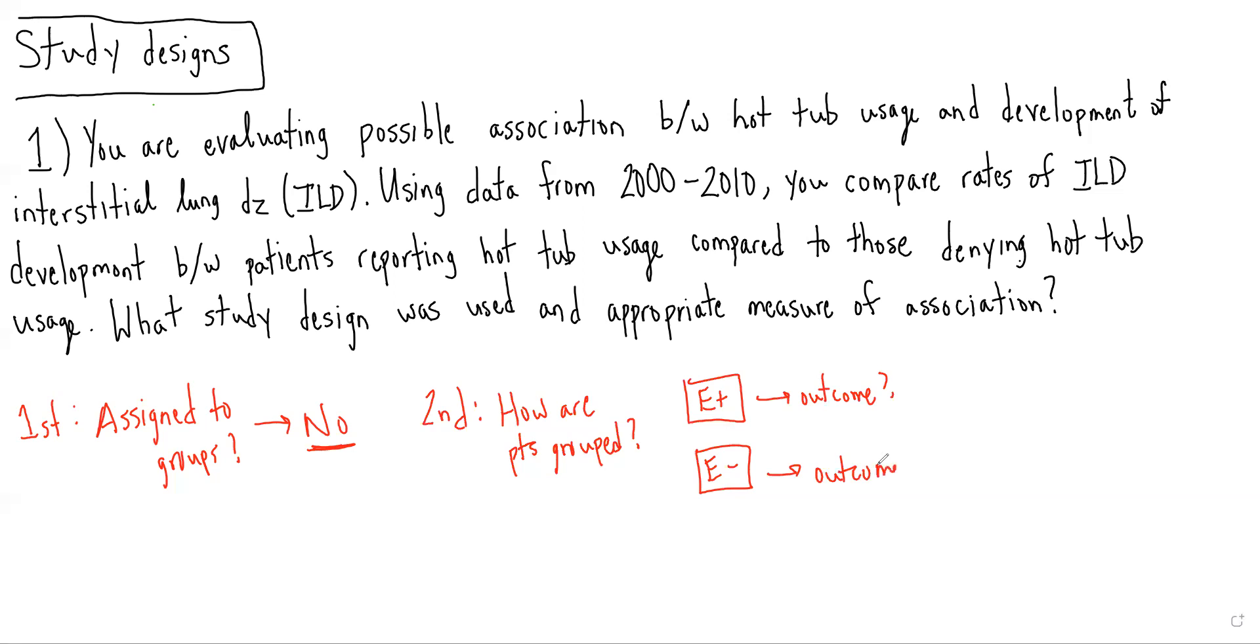Because we are grouping patients by exposure status, we know that this is a cohort study. I want to emphasize that cohort studies can be both prospective and retrospective. In this case, assuming you're watching the video sometime after 2021, we're using data from the past, so this is a retrospective study.